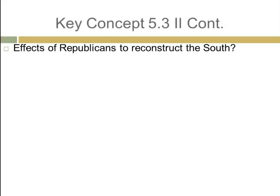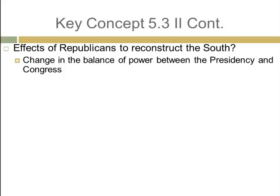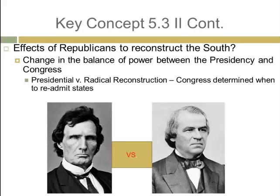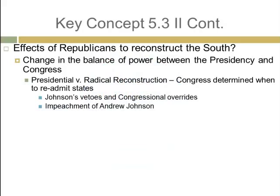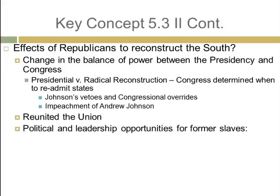What were the effects of the Republicans' effort to reconstruct the South? There was a change in the balance of power between the presidency and Congress — presidential versus radical Reconstruction. Congress ultimately determined when to re-admit states because they determined the rules for Congress. Johnson would veto virtually every Radical Republican bill, and then the Radical Republicans would override those vetoes. We see Thaddeus Stevens in the House versus President Andrew Johnson. Andrew Johnson was impeached — meaning charges were brought against him — but he was not removed. It fell one vote shy.